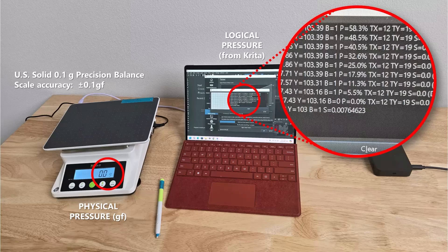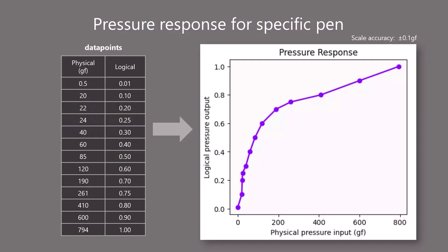I will quickly summarize, and then we can start getting into the details. If you take a digital scale that measures physical pressure and then an application like Krita that shows you logical pressure, you can collect a set of data points. Those data points relate physical and logical pressure for a specific pen. If you plot those data points on a chart with physical pressure on the x-axis and logical pressure on the y-axis, you get this chart — this is the pressure response for a specific pen, which defines the pressure behavior of the pen.